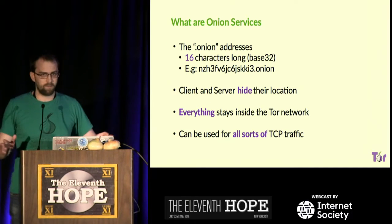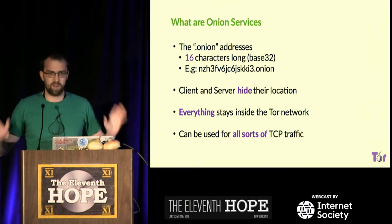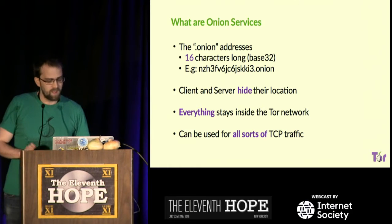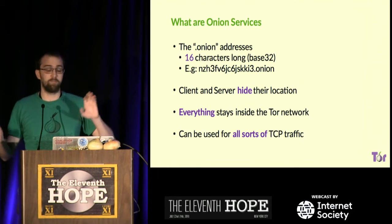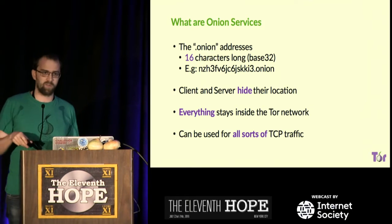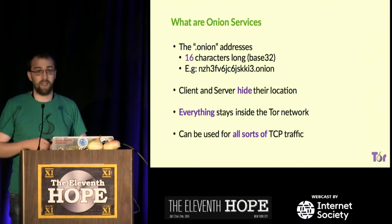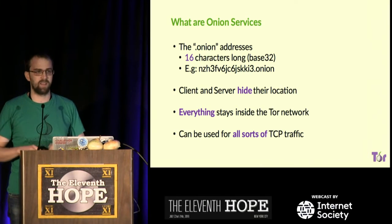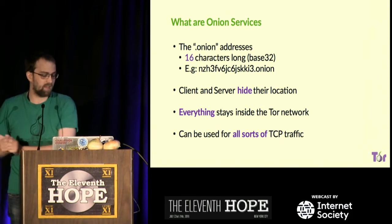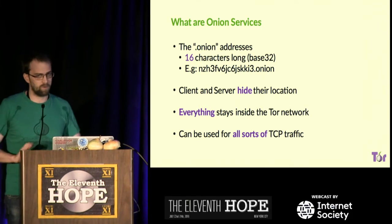A quick overview of what onion services are. One .onion address is 16 characters long, base 32. Both the client and service side are hidden — both are anonymous. It's a very important property because as a client and as a server, you can protect yourself. Everything stays inside the Tor network, meaning onion service traffic doesn't go outside through an exit node. And all sorts of TCP traffic — remember, Tor is only TCP.